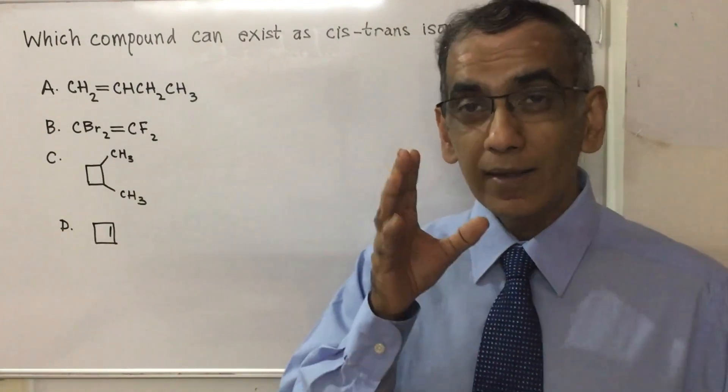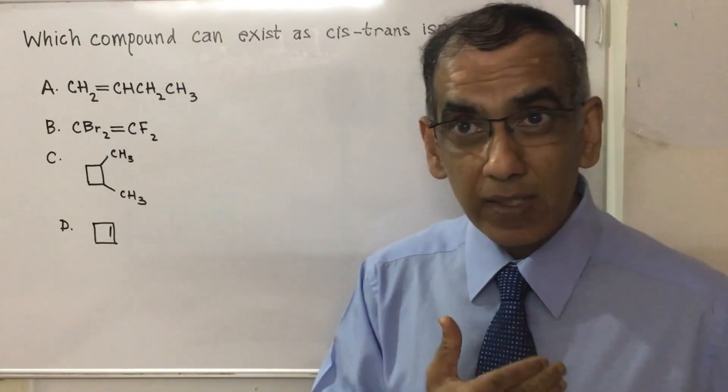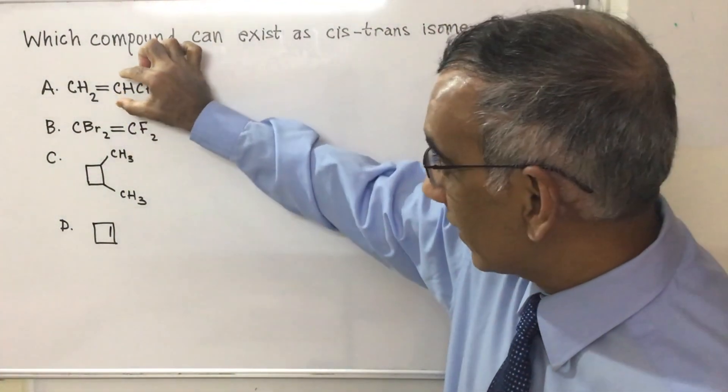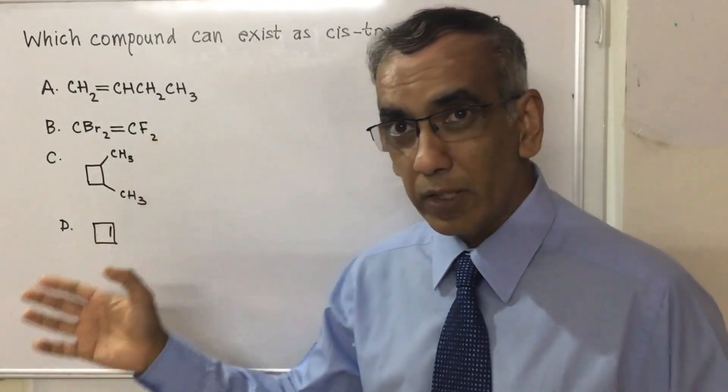And on top of that, many teachers, including myself, would focus on cis-trans isomerism with alkenes like these, with the double bond as the point of unsaturation.